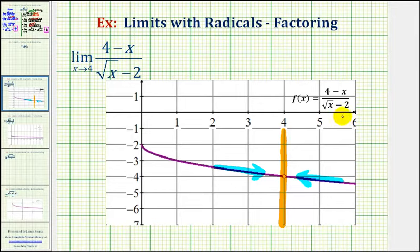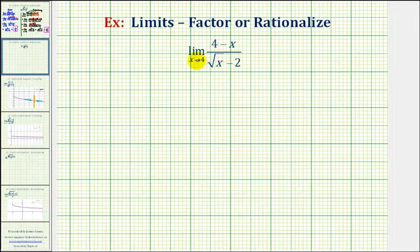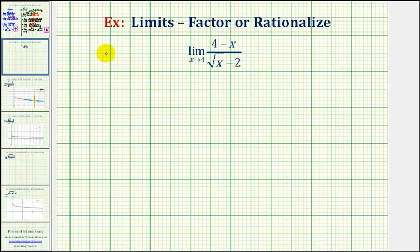But to find this limit analytically, we'll have to manipulate this function so that we can find this limit by using direct substitution. We can do this using a factoring technique or by rationalizing the denominator. In this video, we'll take a look at both methods. Let's first take a look at the factoring method.